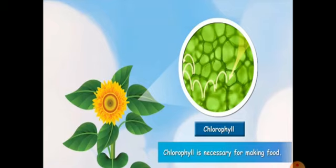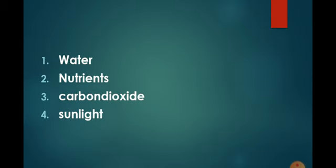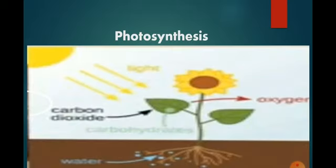But how? They require four things. First, water. Second, nutrients. Third, carbon dioxide. Four, sunlight. Now this process of making food by green leaves of the plants in the presence of sunlight with the help of water, nutrients and carbon dioxide is known as photosynthesis.